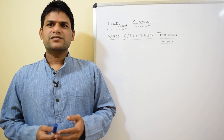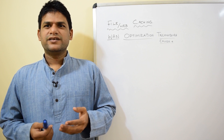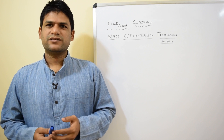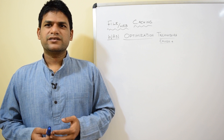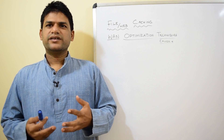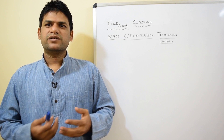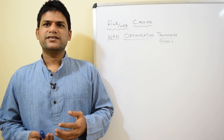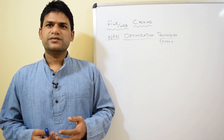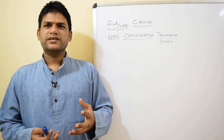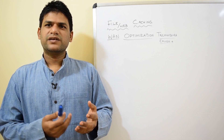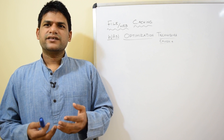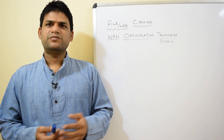File or web caching is one of the oldest and most popular ways to optimize your WAN network data and any kind of long-distance communication. Every time you are trying to pull a redundant file, it can be pulled from your caching server. There are many advantages and disadvantages of file caching. We can use 'file caching' as a generic term, or 'web caching' in the context of web traffic.